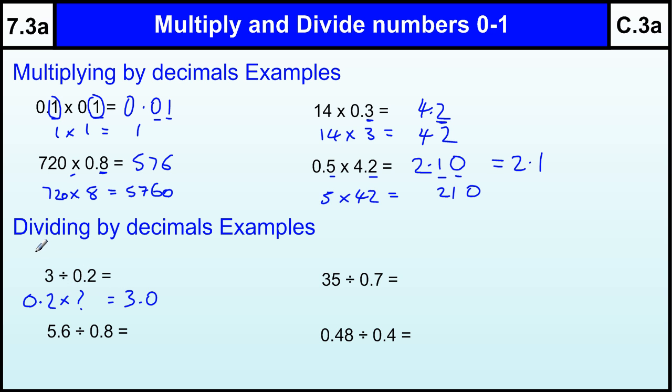Now another way of looking at it is to make sure your divisor is a whole number. If you think about this as a fraction, although it's not a fraction because it's got a decimal in it, we need to find an equivalent fraction where the bottom number is a whole number. So if I times the top and bottom by 10, I end up with 30 divided by 2, which is clearly 15.